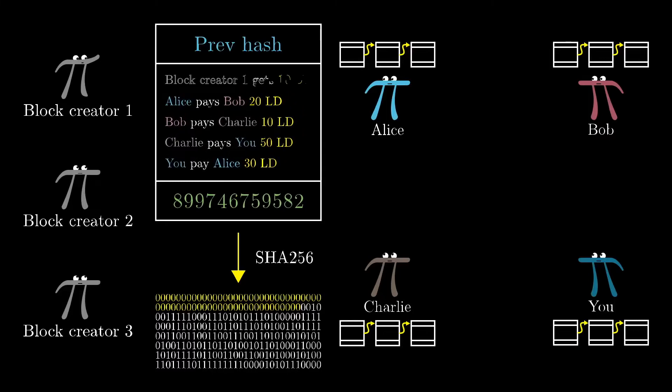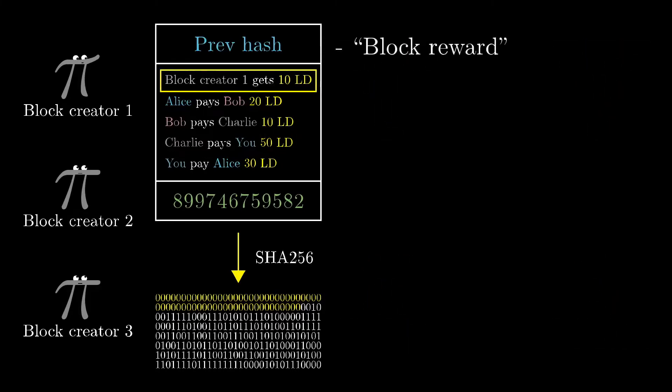This is called the block reward, and it's an exception to our usual rules about whether or not to accept transactions. It doesn't come from anyone, so it doesn't have to be signed. And it also means that the total number of ledger dollars in our economy increases with each new block.